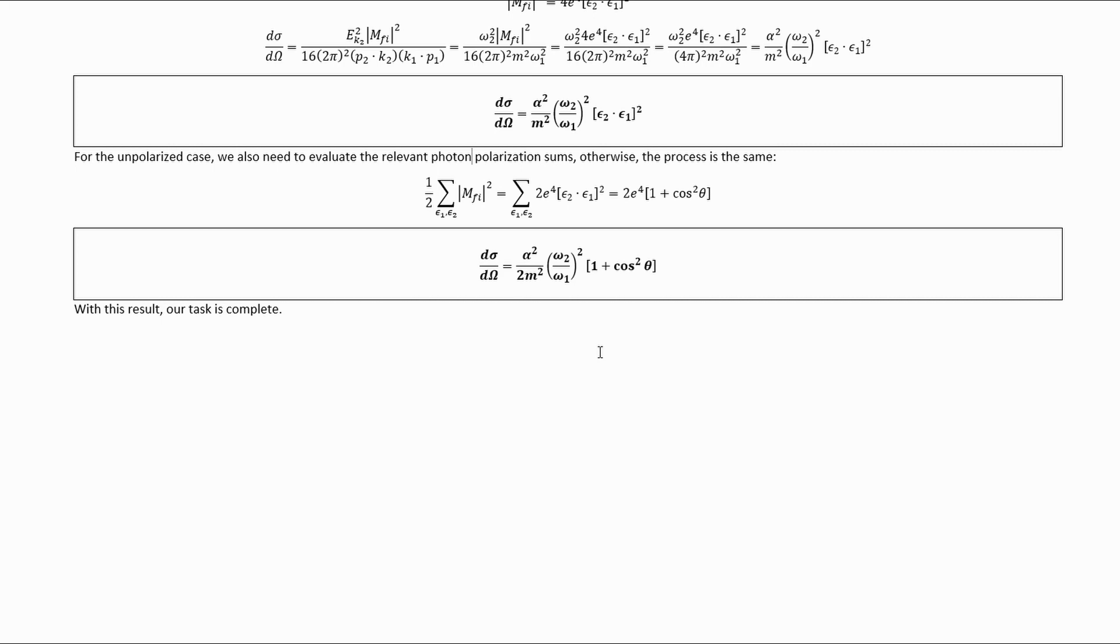And that completes our task. So now you know how to derive the tree-level differential scattering cross-section for Compton scattering, as given by scalar quantum electrodynamics. It's a really quick calculation. It's kind of stunningly quick, given that it's technically in the subject of quantum field theory. I hope this video was interesting and educational. If it was, please give it a thumbs up and consider subscribing. The barn always seemed like an impractically large unit of area to express scattering cross-sections in, but who am I to argue with decades of physicists?